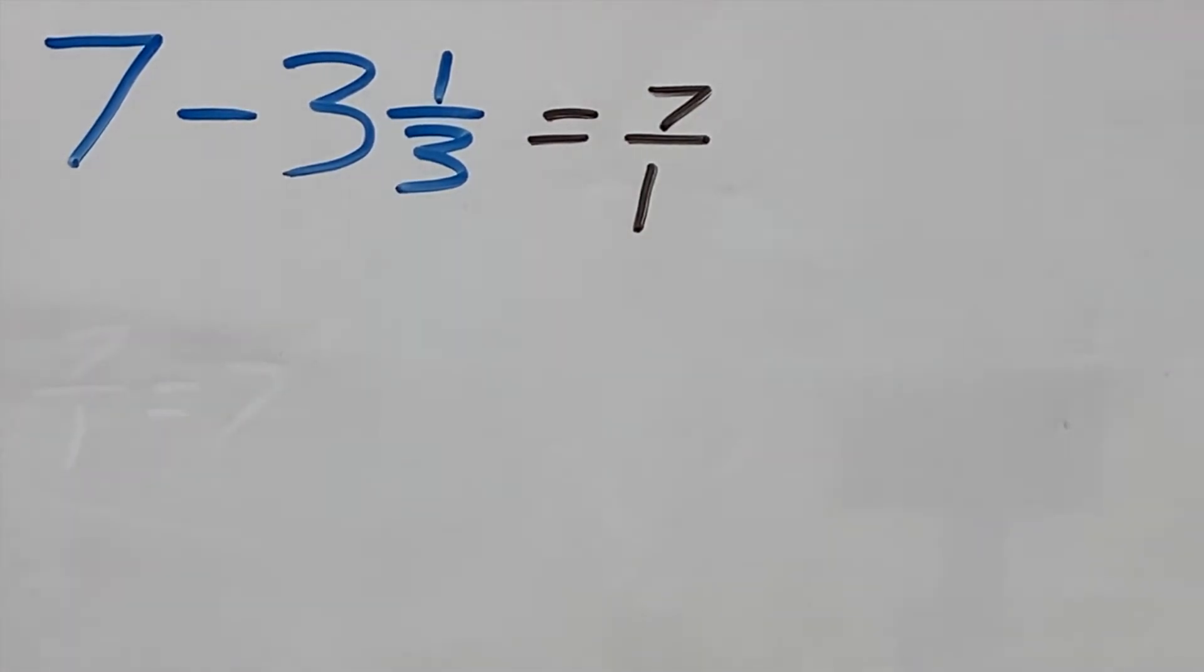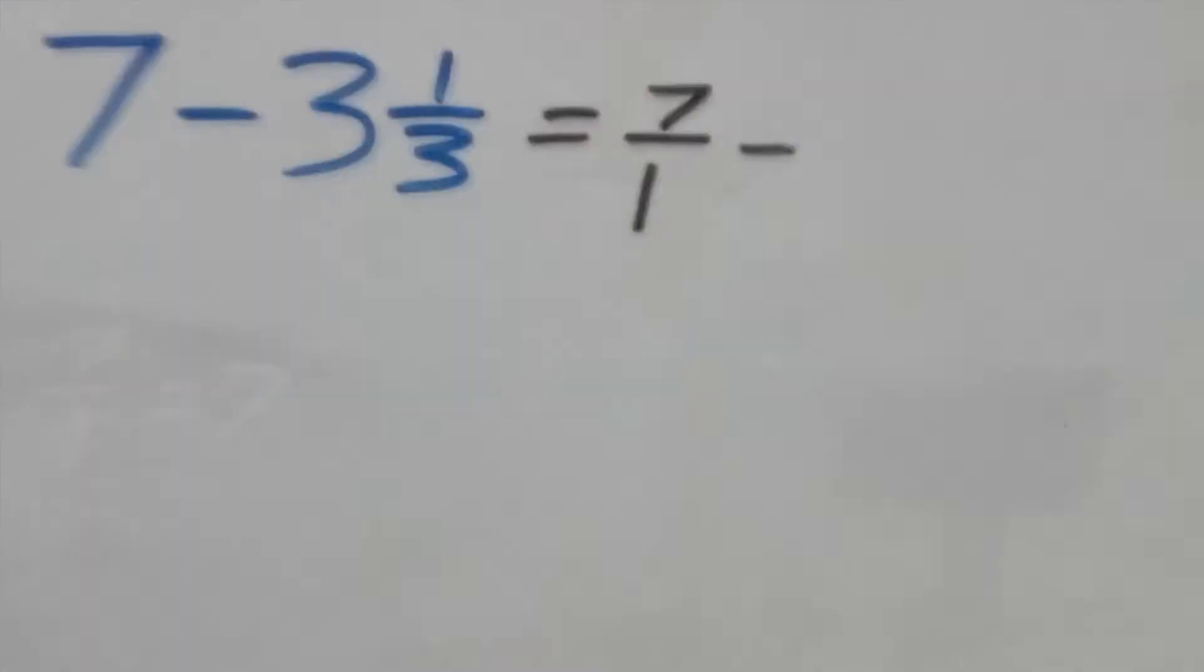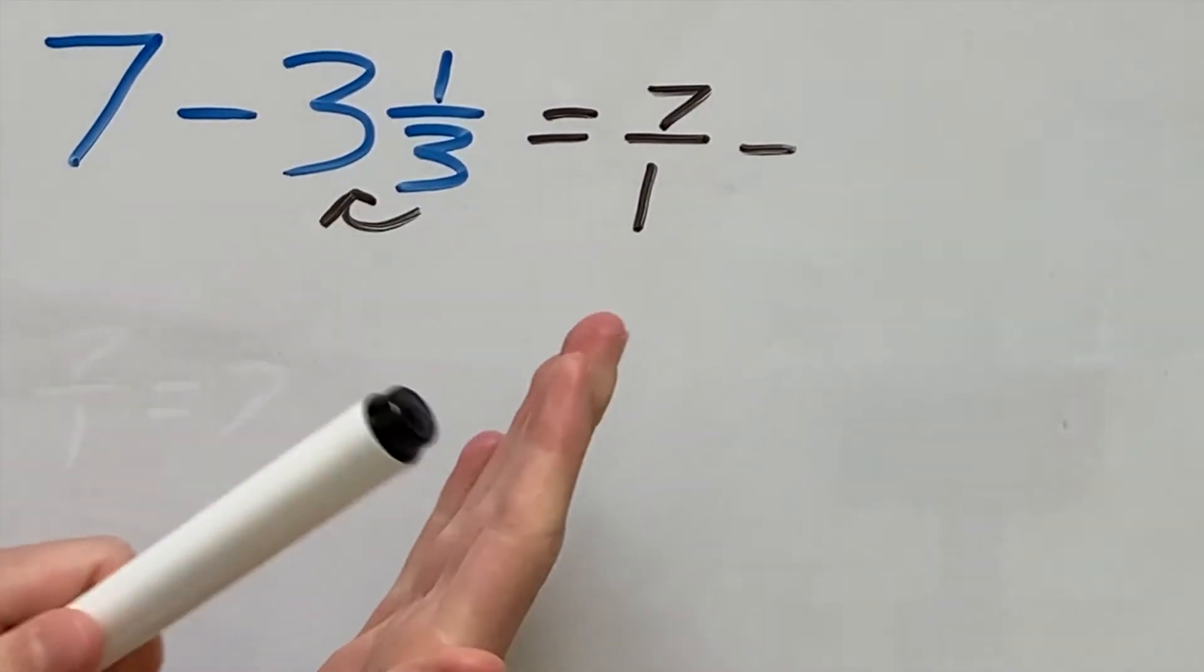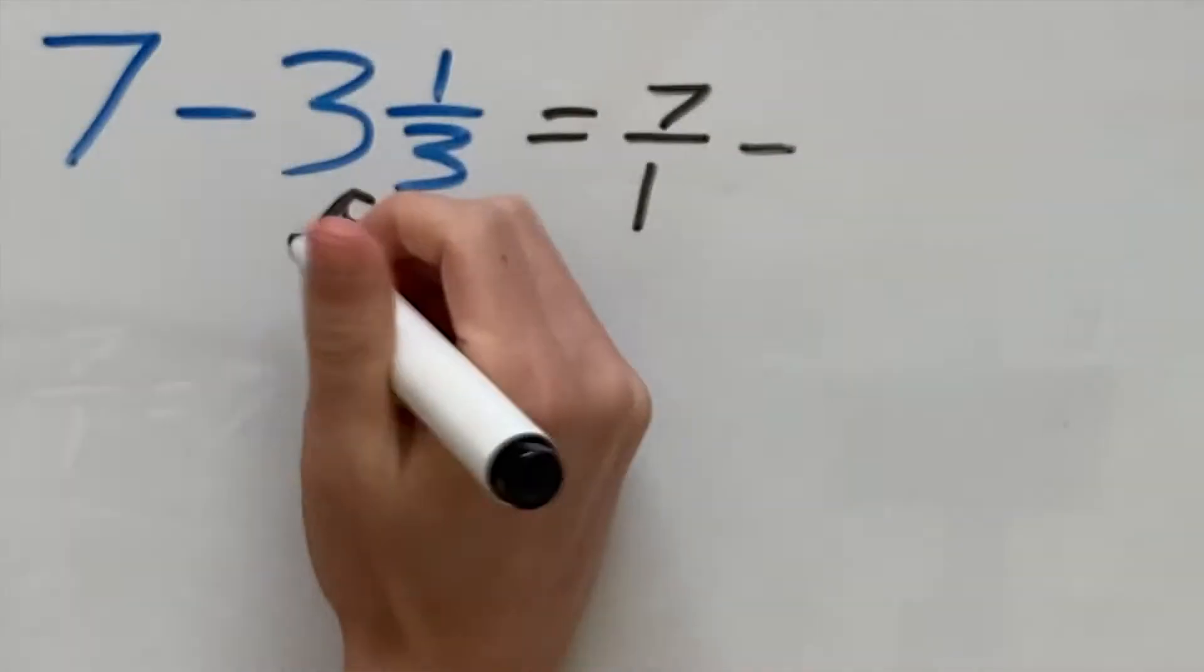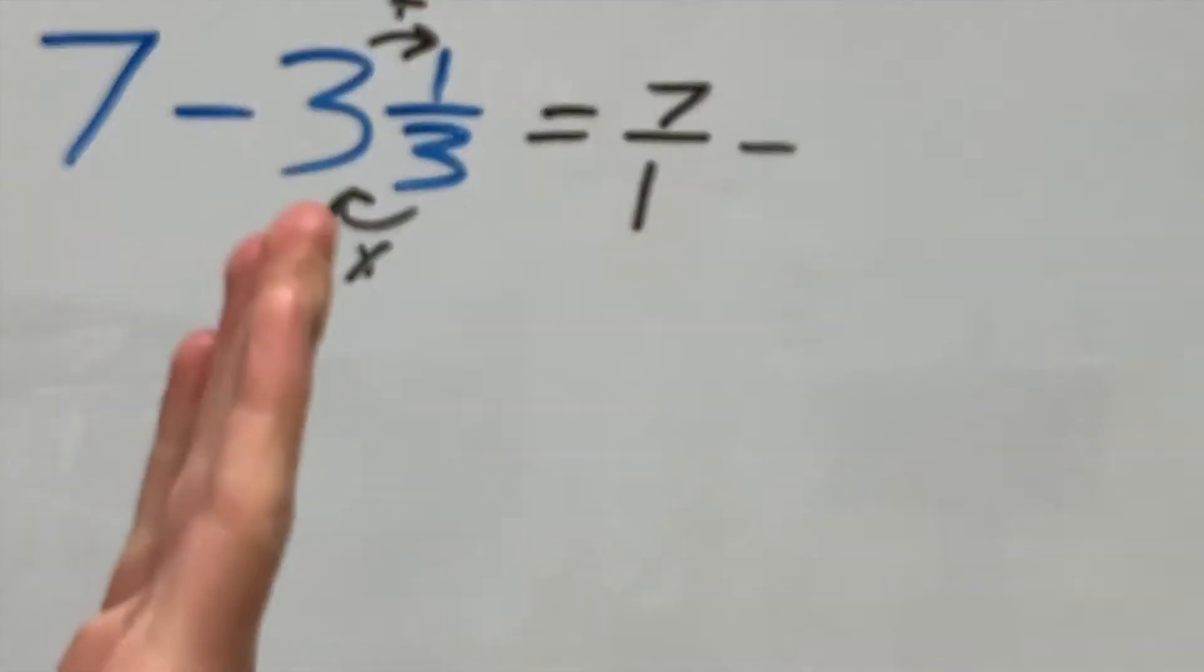Next, we can rewrite our mixed number as a fraction by converting it to an improper fraction. You do that by multiplying the denominator by the whole number at the front and then adding that to the numerator.